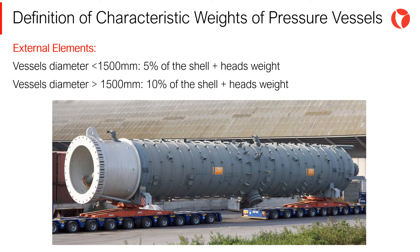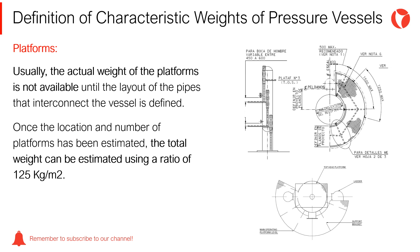Welded elements on the outside of a pressure vessel, such as ladder supports, platforms, vacuum rings, insulation rings, and piping clips, may vary significantly with the diameter of the vessel. There are different rules and guidelines to estimate these appurtenances and external attachments, such as the one shown on the screen. Usually, the actual weight of the platform is not available until the layout of the pipes that interconnect the vessel is defined. Once the location and number of platforms has been estimated, the total weight can be estimated using a ratio of 125 kg per square meter.